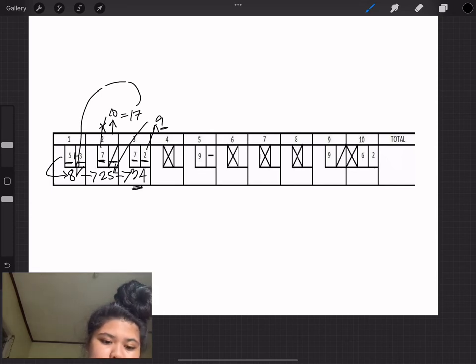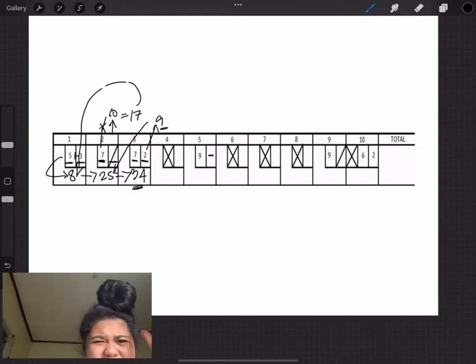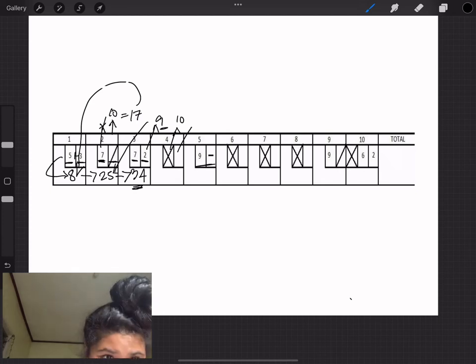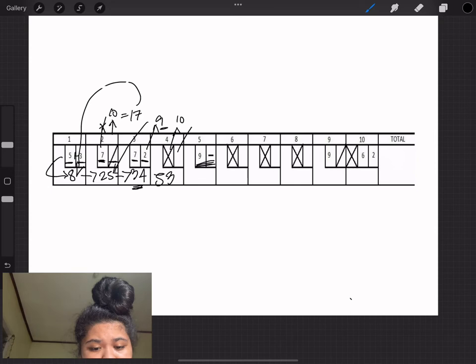Moving on, that X over there means a strike. That basically means that the person wiped out all 10 pins on their first ball. And what this means is that the person gets 10 points plus the total scores of the next 2 balls. Add that to the previous 34 and we have ourselves 53 for our fourth score.